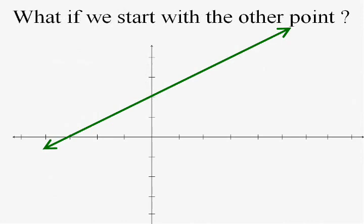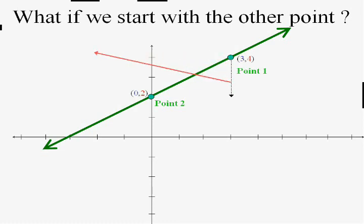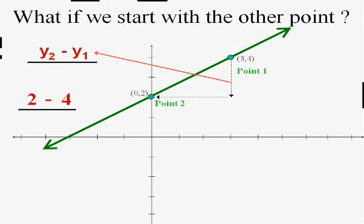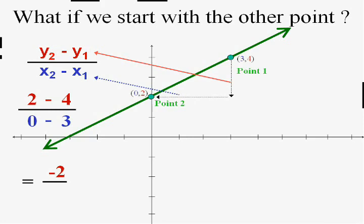What if we start at the other point and work backwards? It'll still work. I'm going to let point one be three-four this time and point two be zero-two. Now y2 minus y1 would be two minus four rather than four minus two. As long as you're consistent, x2 minus x1 would be zero minus three instead of three minus zero. Two minus four is negative two and zero minus three is negative three, and if we reduce that, we still get two-thirds.